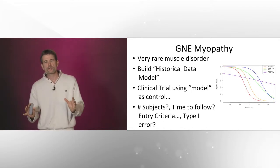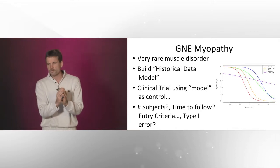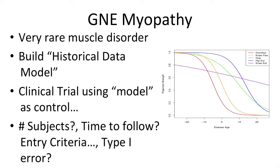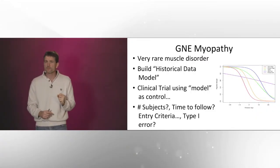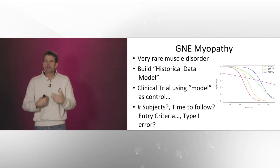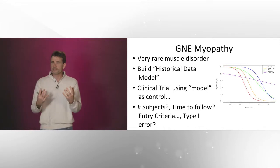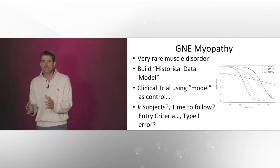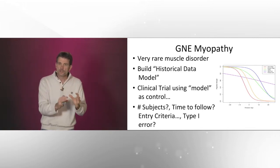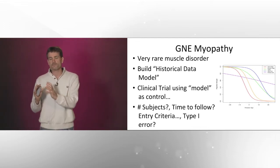GNE myopathy is a very rare disease — subjects progress over 20 or 25 years, and on the order of 5 in a million patients have it. Rather than compare to historical data or randomize patients to a placebo, we built a disease progression model. Subjects are allocated entirely to treatment and compared to the disease progression model. This is a complicated trial — the disease progression model tracks expected strength in various muscles over time. How does a trial like this behave? How many patients do we need? How long do we follow patients? What's the type 1 error? You can't do this on paper, but we can build this complicated trial in software in silico to create a much more effective trial design.